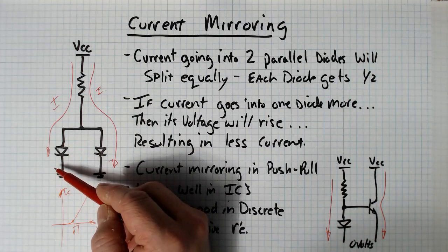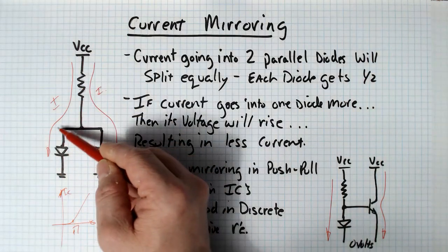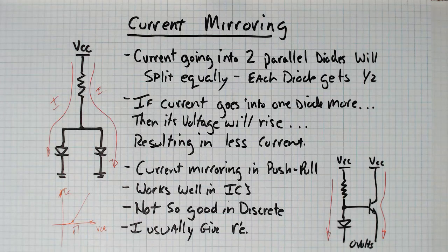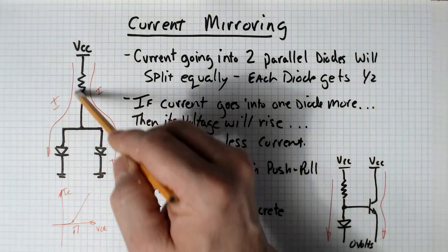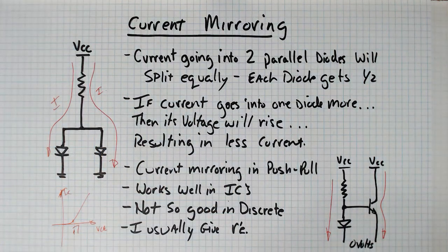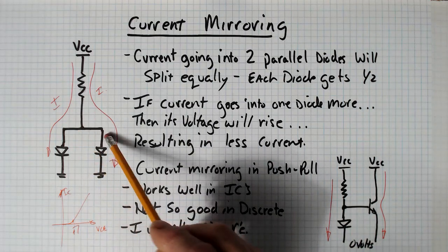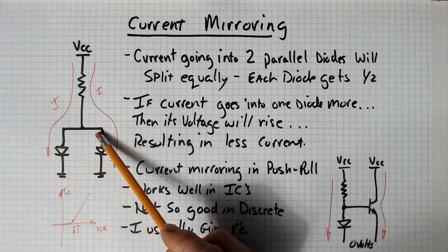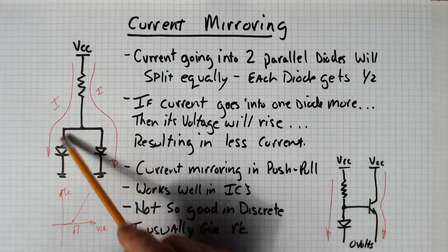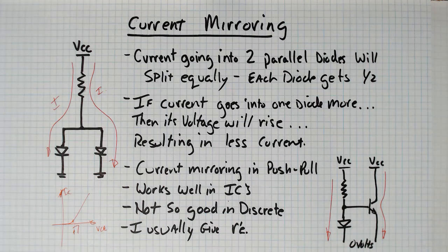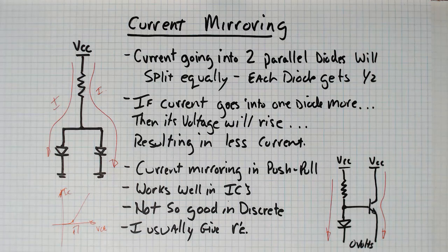And this side is sitting at 0.7, and all of a sudden this is the path of least resistance, and so the current starts shifting back towards this side. So if too much current goes this way, the voltage goes up and then the current goes back the other way. So it naturally, if the diodes have the same characteristics, they naturally share the current.